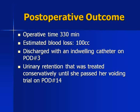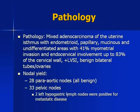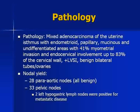Her total operative time was 330 minutes with 100cc blood loss. She was discharged without complication with an indwelling catheter on post-operative day 3. She had urinary retention post-operatively that was treated conservatively until she passed her trial of void on post-operative day 14. Final pathology revealed a poorly differentiated mixed adenocarcinoma of the uterine isthmus with endometrioid, papillary, mucinous, and undifferentiated areas, with 41% myometrial invasion and endocervical involvement up to 83% cervical wall invasion. 28 periaortic lymph nodes were obtained, all negative for tumor, and 33 pelvic lymph nodes were obtained with two positive left hypogastric lymph nodes. Her final stage was noted to be stage 3C uterine papillary serous carcinoma upon further review.